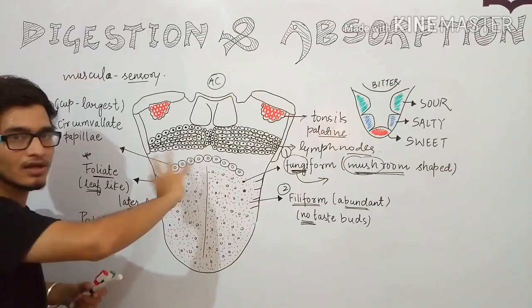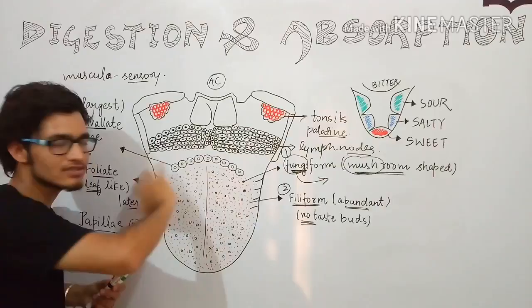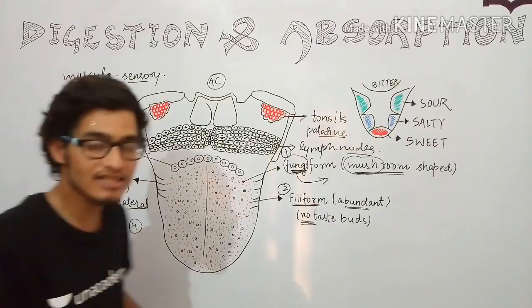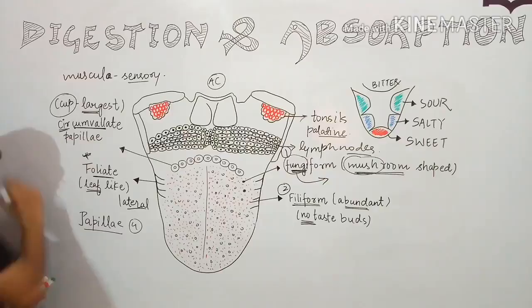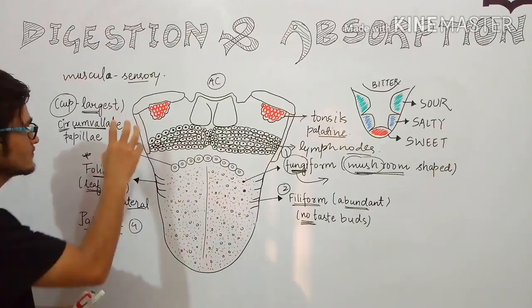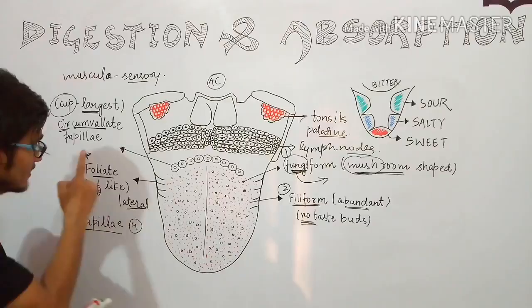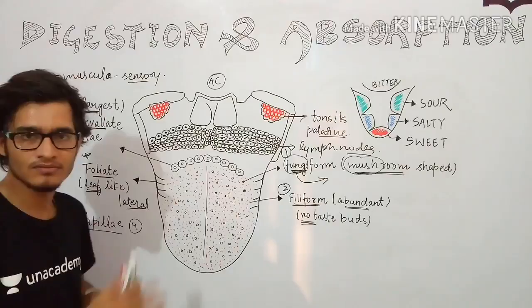The fourth type, present on the upper part of the tongue, is circumvallate papillae. They form a structure like a circle, and these are the largest papillae present on the tongue. They are cup shaped. Important exam questions: the most abundant kind of papillae are filiform, the largest ones are circumvallate, and the leaf-like papillae present on the lateral sides as folds are the foliate papillae.